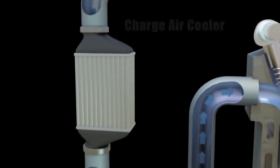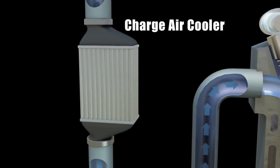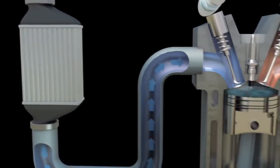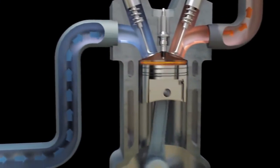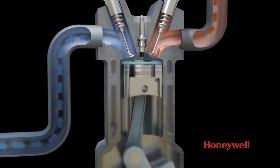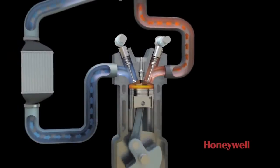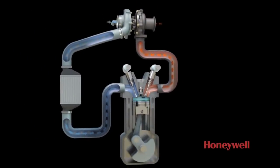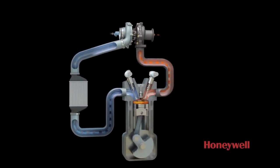This air then passes through a charge air cooler, where it is cooled and gains an even higher density prior to entering the engine. Once in the engine, the compressed air allows the engine to efficiently burn more fuel, making for extremely efficient engine operation.